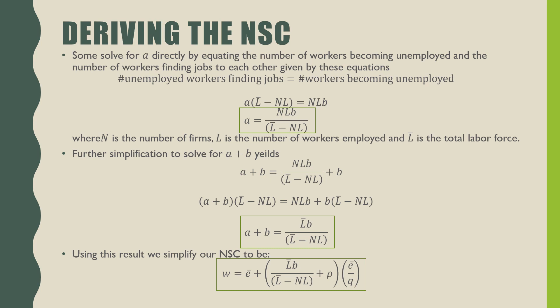Thus, we can use this result to simplify our no shirking condition: the wage equals the effort put in E-bar plus L-bar times B all over L-bar minus NL, plus rho times E-bar over Q. So that is our video on the no shirking condition. In the next video, we're going to talk about visualizing this model. I'll see you then.